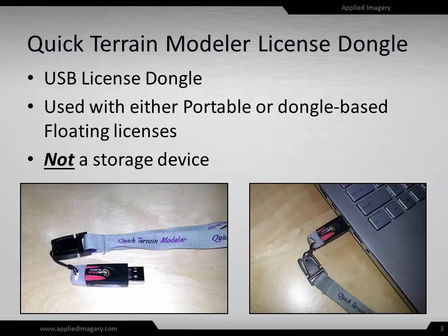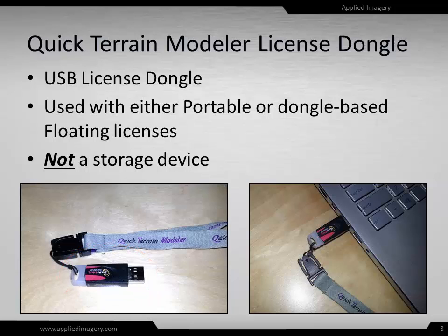A dongle is a small USB device that looks like a thumb drive. It's important to note that it is not a thumb drive, as it has no storage capability whatsoever. For portable licenses, the Quick Terrain Modeler license dongle must be plugged into the local machine for Quick Terrain Modeler to launch.